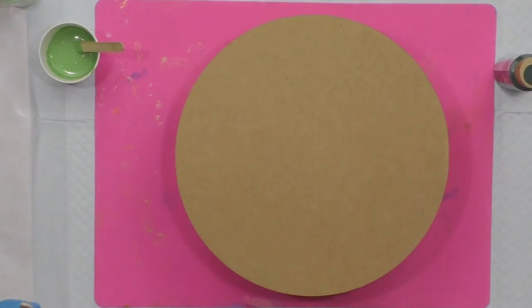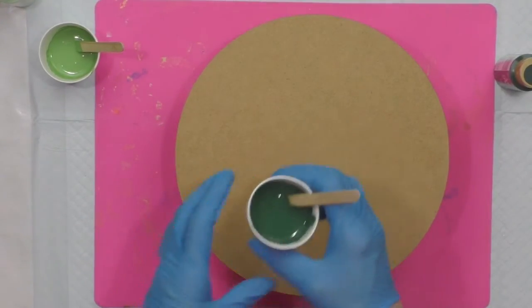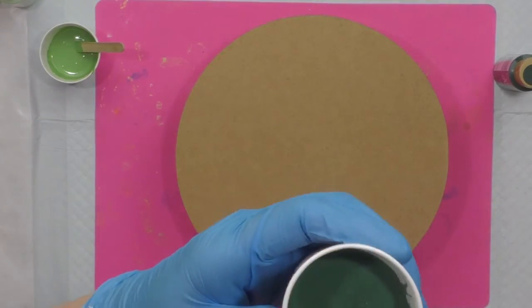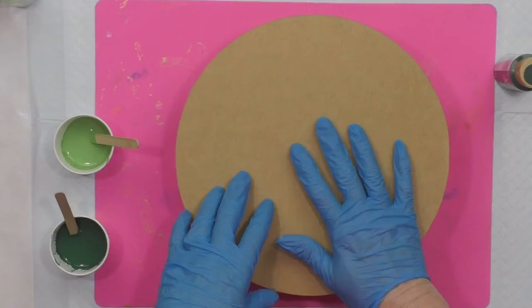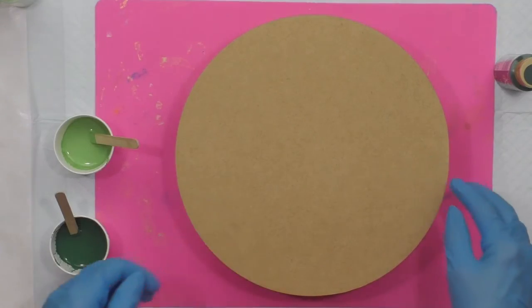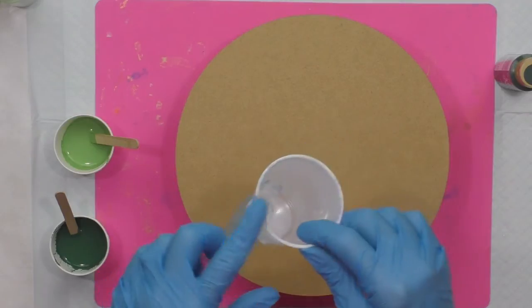You'll just mix this up and stir it up really well. You want the consistency like melted ice cream or warm honey and it just kind of falls into the surface of the paint, but not drippy and not thick.